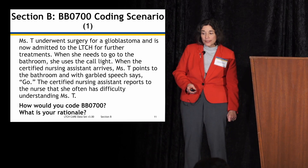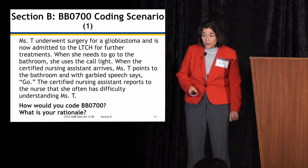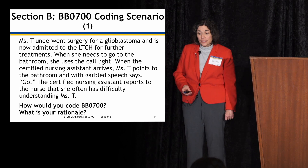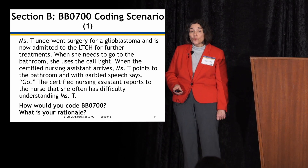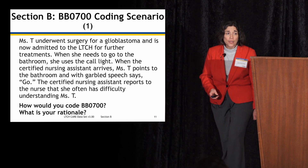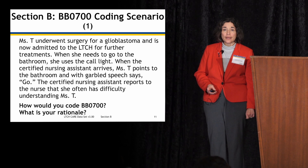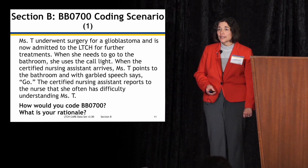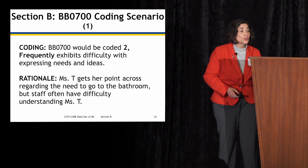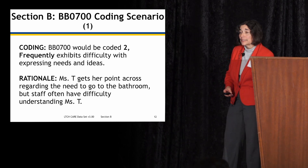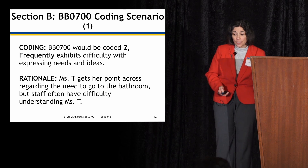Second scenario for BB0700: Ms. T underwent surgery for a glioblastoma and is admitted to the LTAC for further treatments. When she needs to go to the bathroom, she uses the call light. When the CNA arrives, Ms. T points to the bathroom and with garbled speech says, 'go.' The CNA reports she often has difficulty understanding Ms. T. The answer is code 2 — frequently exhibits difficulty with expressing needs and ideas — because Ms. T gets her point across but staff often has difficulty understanding her.